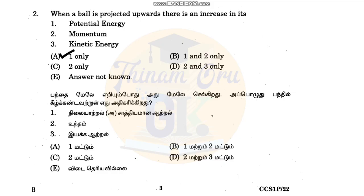If the 10th is on the top, then this is the potential energy. So if we have an object, this is the potential energy. At the same time, the kinetic energy is on the top.